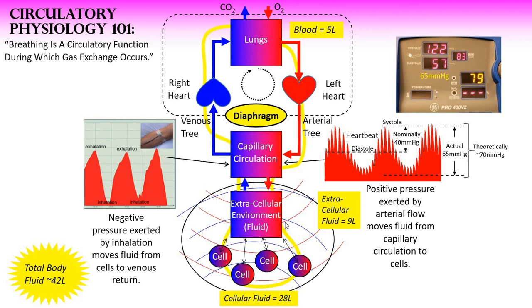The greater circulation looks like this: right heart, lungs, left heart, arterial tree, capillary circulation, extracellular fluid environment, to the cells. Fluid flows back out of the cells upon inhalation, back into the capillary circulation, back into the venous tree, through the right heart, and back to the lungs. There are other organs in this loop — the kidneys, for one, with blood flowing through them all the time to be cleaned and filtered. There are also other pathways for fluid out of the extracellular environment, including the lymph system. The interstitium supports these different channels that allow fluid to be moved, cleansed, hydrated, and nourished.